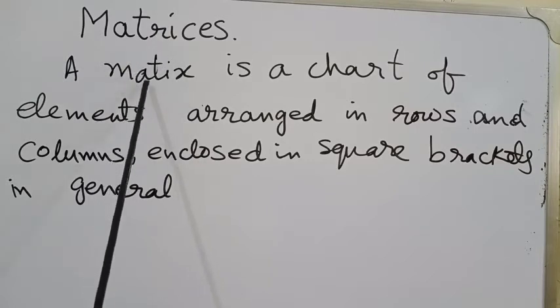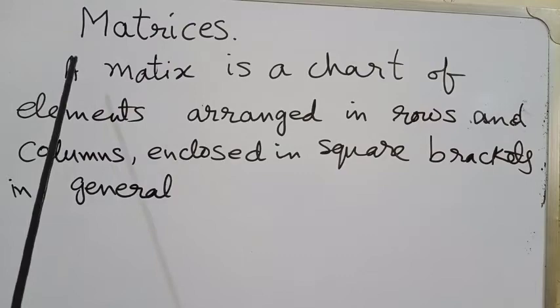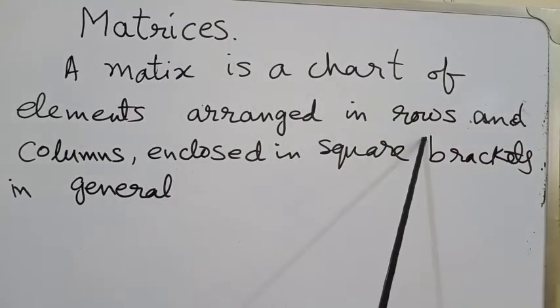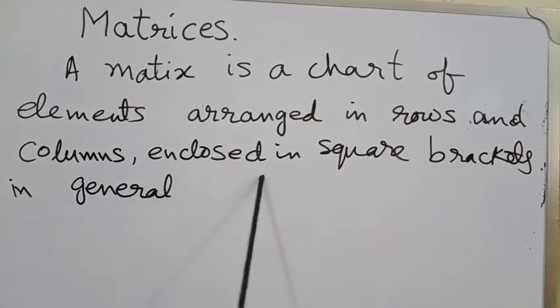Matrix is a singular form and matrices is its plural form. A matrix is a chart of elements arranged in rows and columns, enclosed in square brackets in general.